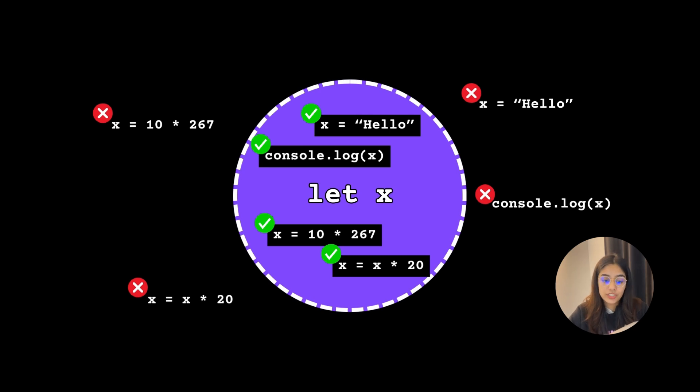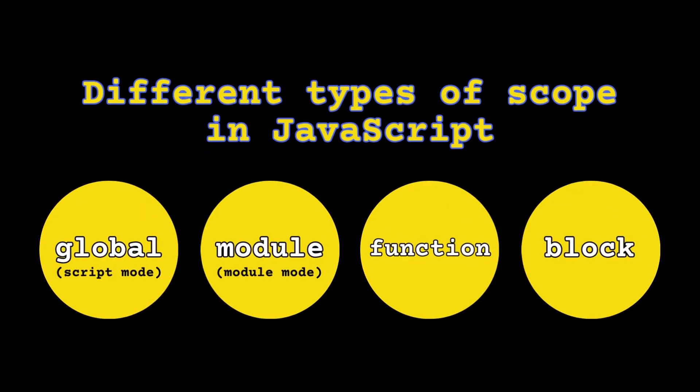JavaScript has the following kinds of scope. The first is the global scope — the default scope for everything inside your JavaScript program — but it's only present in script mode. When you use JavaScript in module mode, with import and export statements, the scope becomes a module scope. We'll mostly use script mode in our examples. After global scope, there's a function scope, created when you create a function. Then there's block scope — everything wrapped within curly braces. Note that a function also creates a block, but the function scope is a special type of block scope treated a little differently.